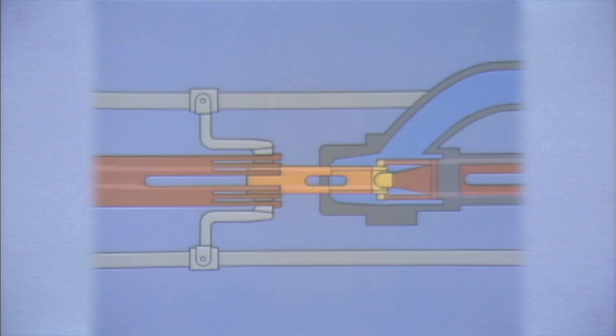When the breaker is closed, the current path is through the stationary and moving contacts. The contacts are surrounded by low pressure SF6 gas.